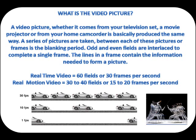A video picture, whether it comes from your television set, a movie projector, or from your home camcorder, is basically produced in the same way. A series of pictures are taken. Between each of these pictures or frames is the blanking period. Odd and even fields are interlaced to complete a single frame. The lines in a frame contain the information needed to form a picture. This new picture will occur at a time that is slightly advanced from the previously viewed picture.